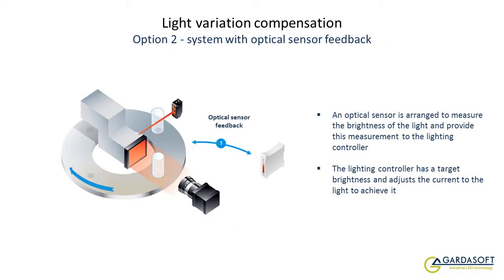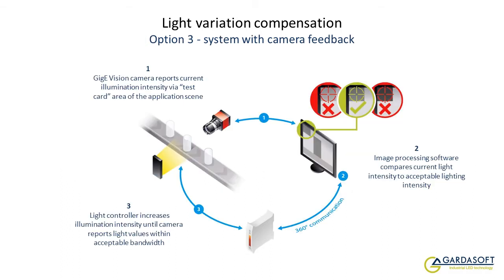The second option uses an optical sensor feedback loop. The optical sensor is arranged to measure the brightness of the light and provide the measurement to the lighting controller, which has a target brightness and adjusts the current to the light to achieve this target. The most comprehensive way of controlling image brightness is using a closed-loop approach based on image illumination levels detected by the camera itself. This is a highly effective solution since it takes into account any changes in the illumination conditions, whether as a result of the LED or any external factors.